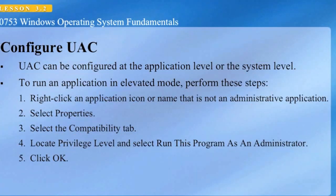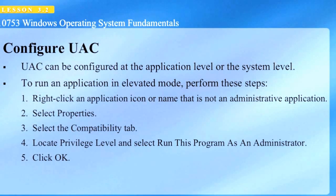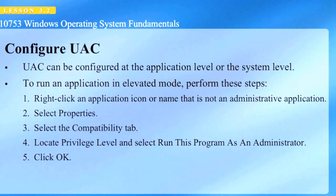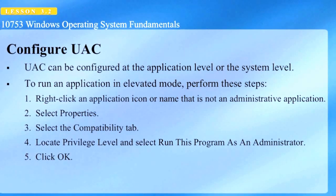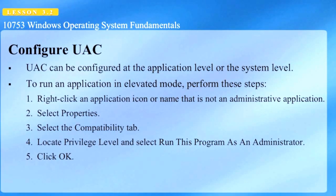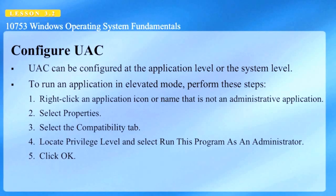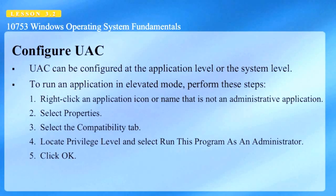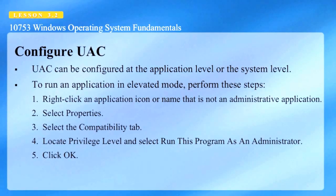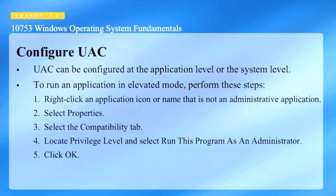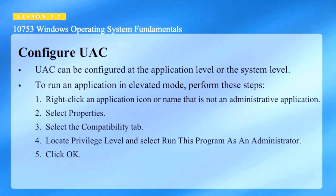UAC can be configured at the application level or the system level. To run an application in elevated mode, perform these steps: right-click on the application that is not an administrative application, select Properties, select the Compatibility tab, locate Privilege Level, and select 'Run this program as an administrator,' then click OK.